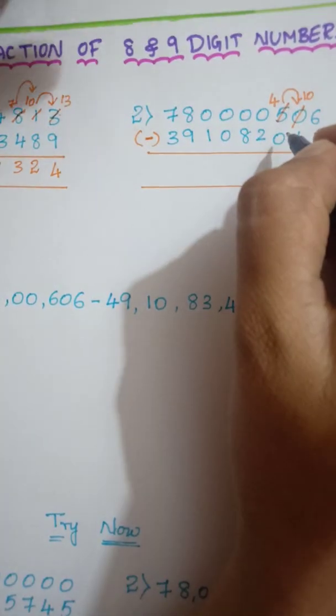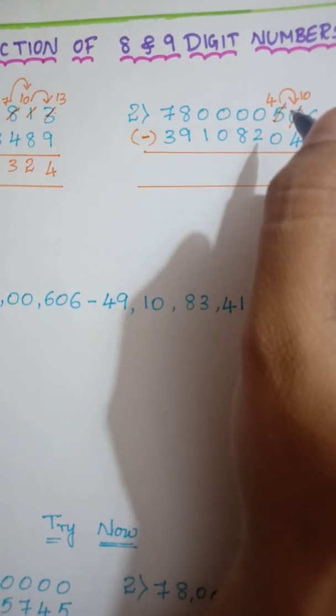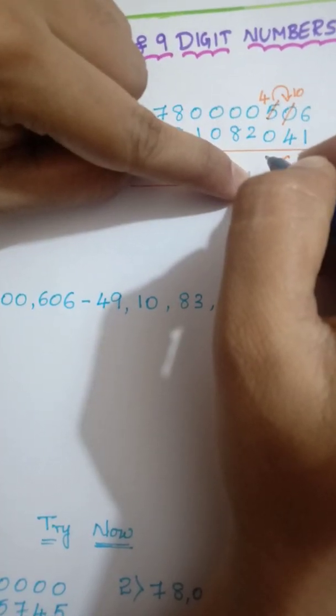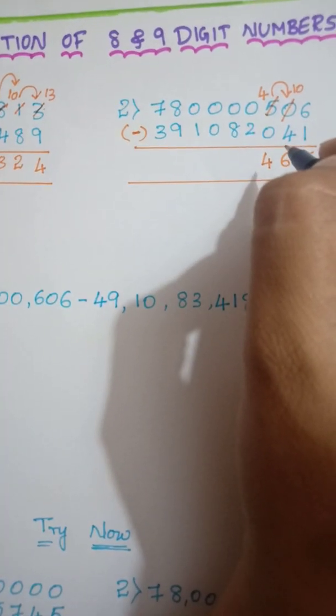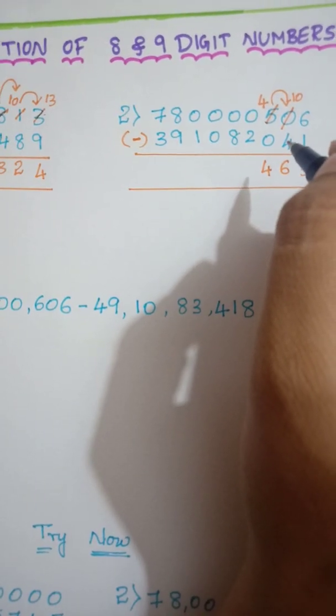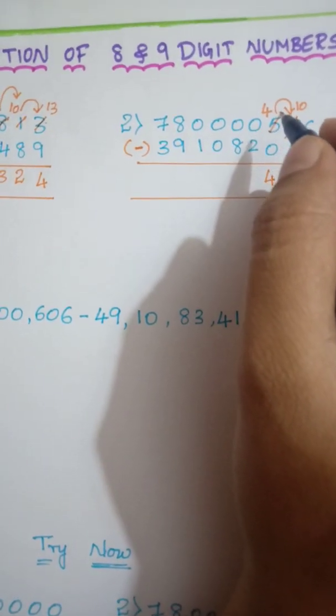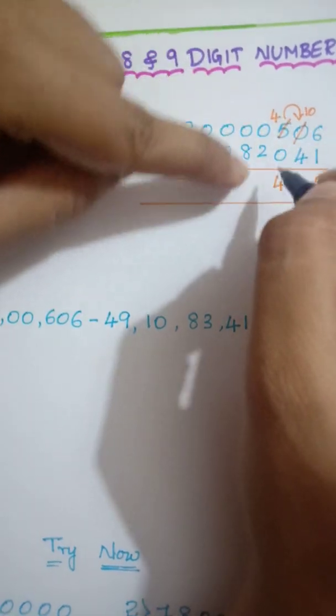4 minus 0. Always remember, like any valuable number minus 0, it will give the answer as that number only. So 4 minus 0 is 4 only. Most of the students I have seen, when I asked, 4 minus 0, they used to say 0. So it's not 0. So valid number if you have, if you subtract 0, 0 has no value. So same number you are going to get.